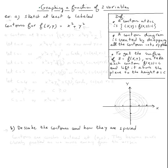The topic is graphing a function of two variables. Question A: sketch at least four labeled contours for f(x,y) = x² + y². By definition, a contour at z = c is the set of all (x, y) such that f(x, y) = c.